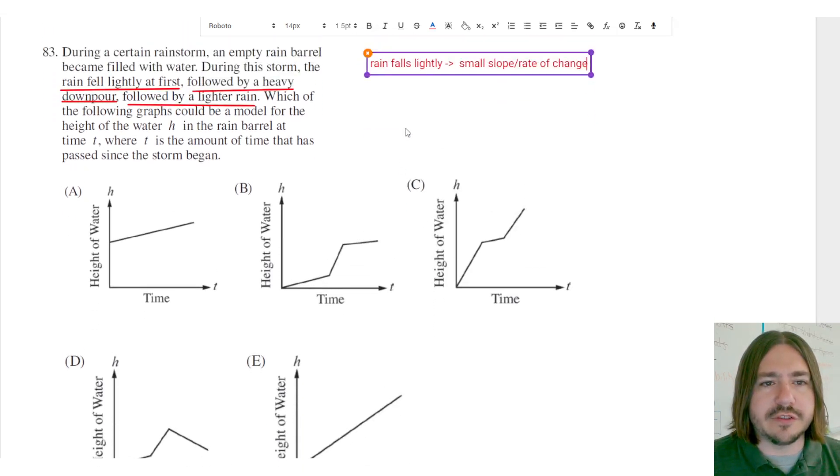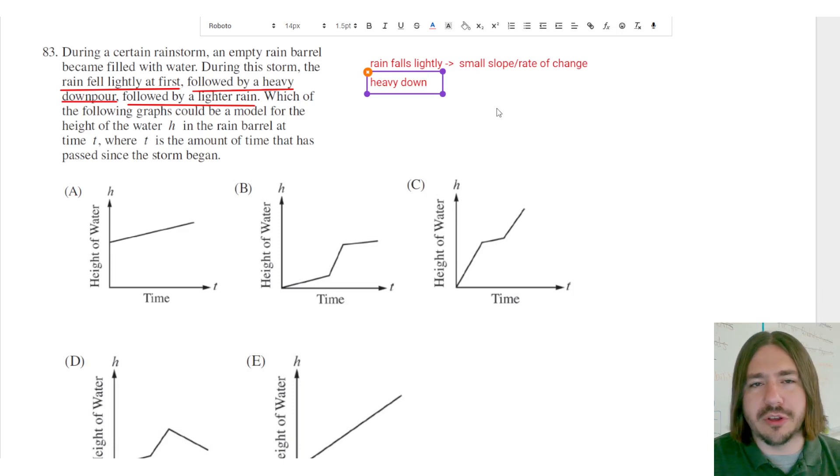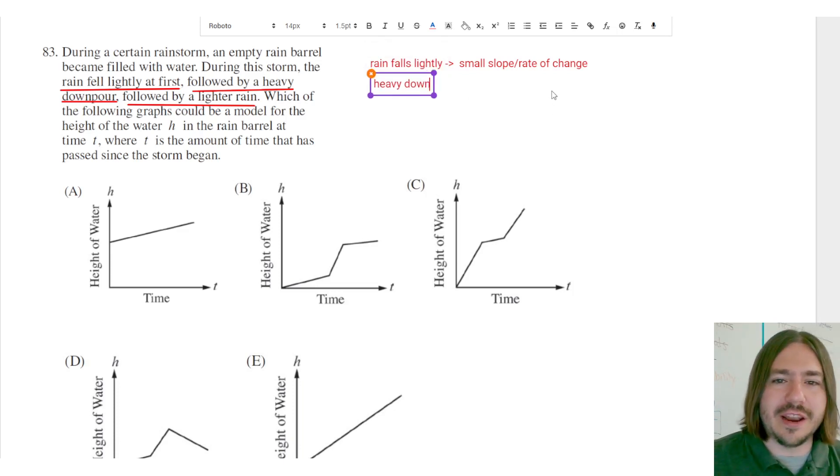And then the second part says it's followed by a heavy downpour. So a heavy downpour means that it's raining more, and the rain barrel should be filling up at a faster rate. So a heavy downpour indicates that we should have a larger slope or a steeper slope.